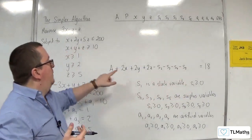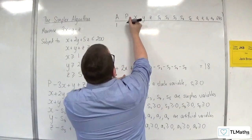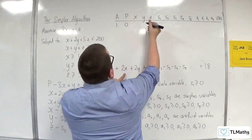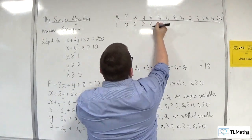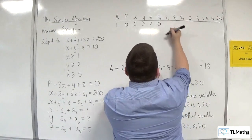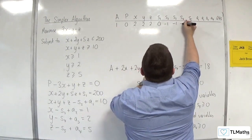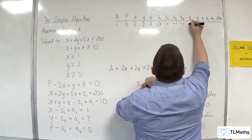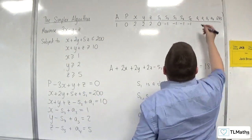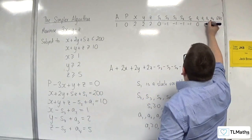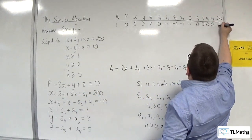Running through the top row: we've got 1, 0 for p. Then 2, 2, 2. Then 0, minus 1, minus 1, minus 1, minus 1. And that's equal to 18. So the right-hand side entries are 0, 0, 0, 0, 18.